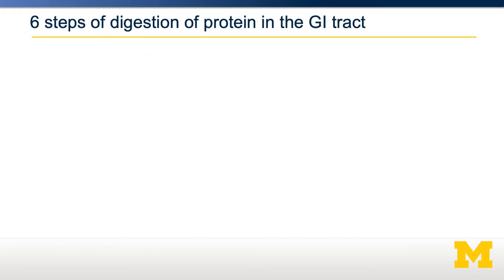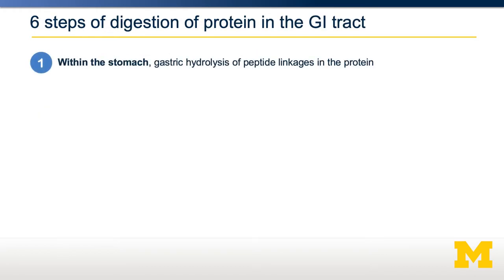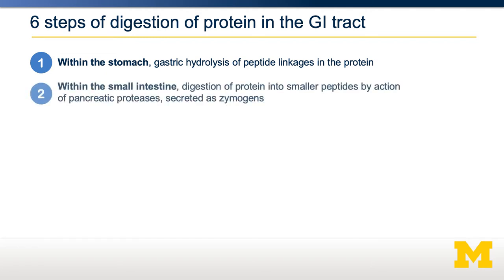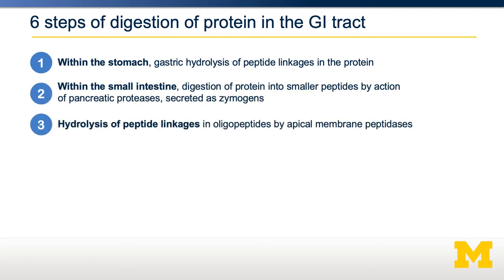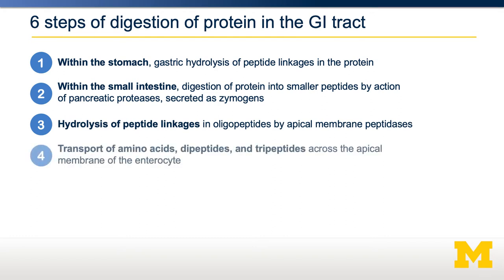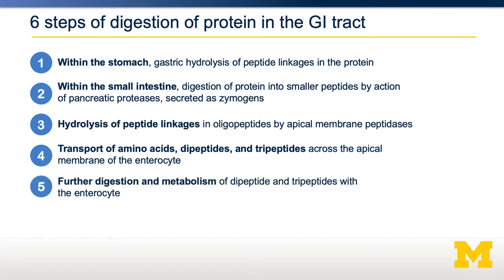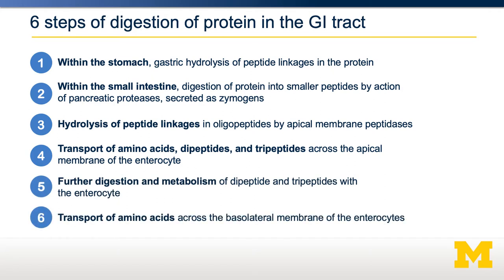There are six steps to protein digestion and absorption. First, in the stomach, we need to start breaking down proteins and activate pepsinogen. Then, in the small intestine, more digestion occurs into small amino acids, dipeptides, and tripeptides. These are then transported into the enterocyte, further digested into amino acids, and then transported out of the enterocyte into our blood.